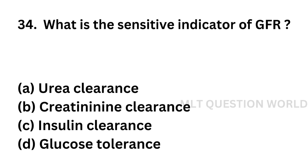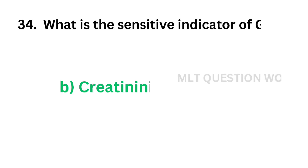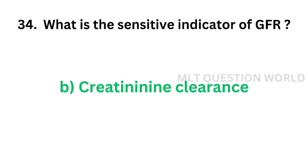Question number 34: What is the sensitive indicator of glomerular filtration rate? Option A: urea clearance, option B: creatinine clearance, option C: inulin clearance, option D: glucose tolerance. The correct answer is option B, creatinine clearance. The most sensitive indicator of GFR is creatinine clearance.